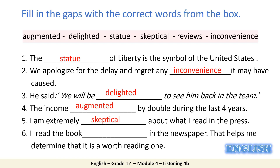The last sentence: I read the book ___ in the newspaper that helps me determine that it is a worth-reading one. The missing word means a piece of writing about the quality of the book. The answer is reviews.